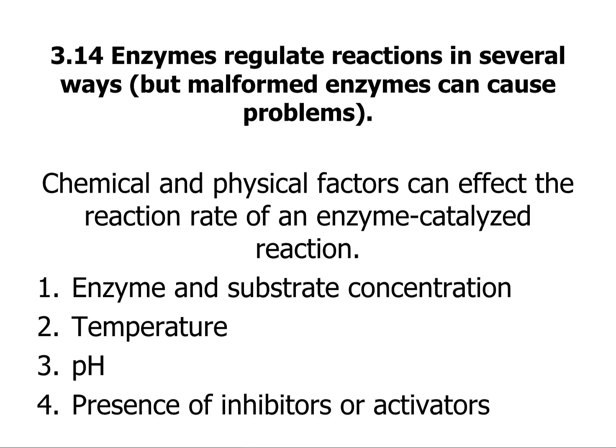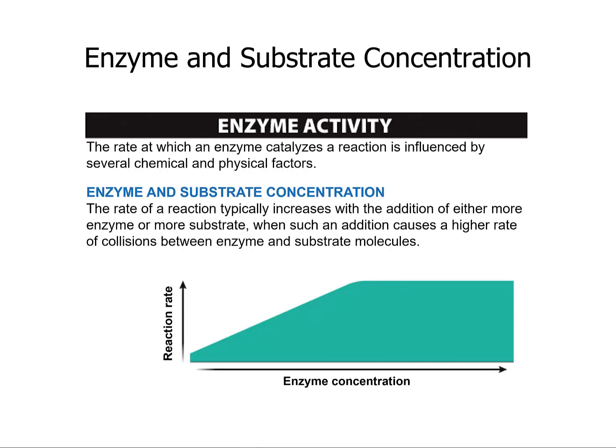Let's go over the final portion here. Enzymes regulate reactions in several ways. Chemical and physical factors can affect a reaction rate — the environmental conditions such as temperature of the water, the pH of the water that surrounds the enzyme, and also the concentration of the enzyme substrate and the presence of inhibitors or activators.